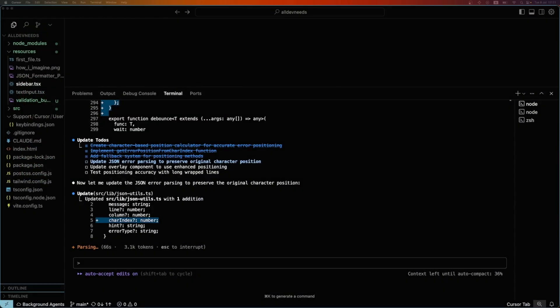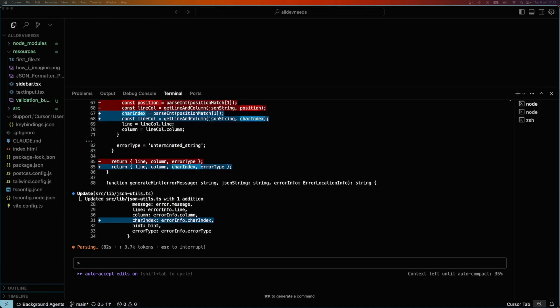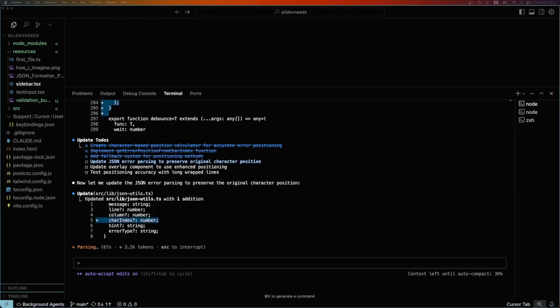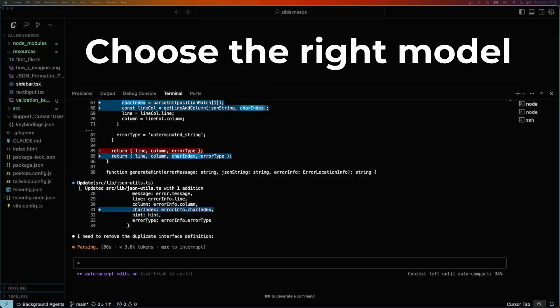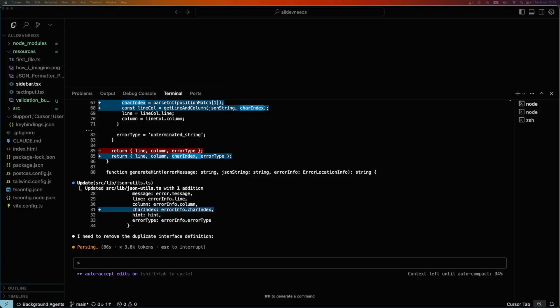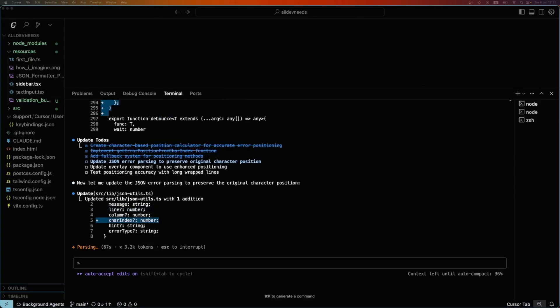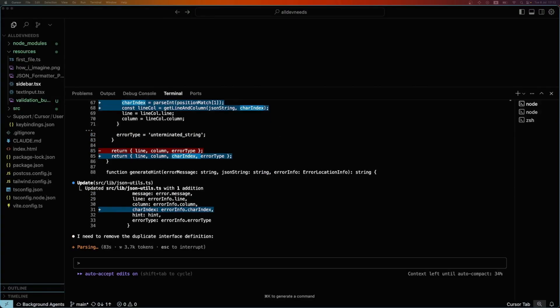If you are on the max plan, you have access to the Opus model, which is awesome, but super expensive in token terms as we saw. Tip number four is all about switching models strategically. Use Opus for high-level planning, complex logic, and deep debugging. Then switch to the Sonnet model for build-out, follow-ups, and light edits.